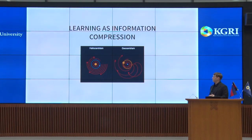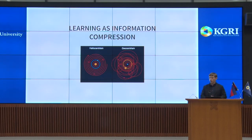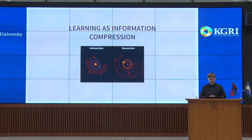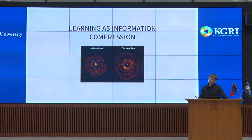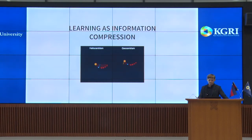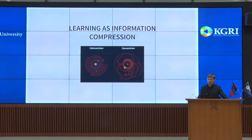Another component of the research I will present is the view of learning as information compression. Consider two descriptions of the solar system: the geocentric model, which prevailed in Europe for a long time due to cultural reasons, and the heliocentric model, which puts the sun at the center. The heliocentric system is much simpler as a model — it takes fewer bits of information to encode the same data with the same accuracy.